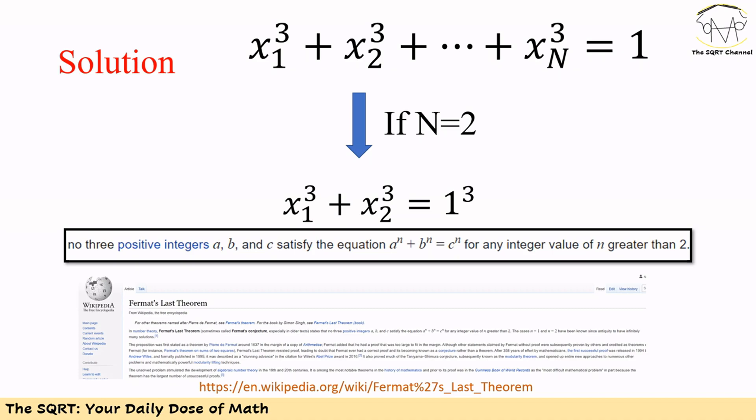Now we are going to use Fermat's Last Theorem. It says there are no three positive integers a, b, and c that we can use to satisfy the equation a to the power of n plus b to the power of n equals c to the power of n for any integer value n greater than 2.